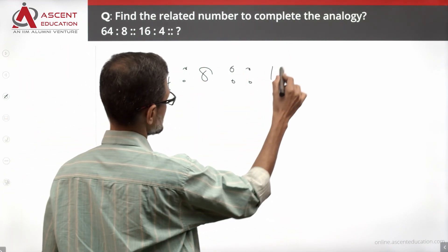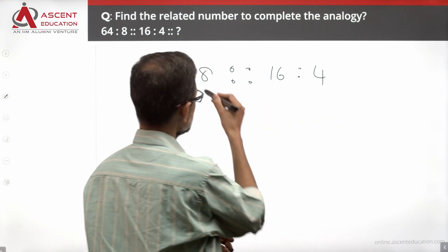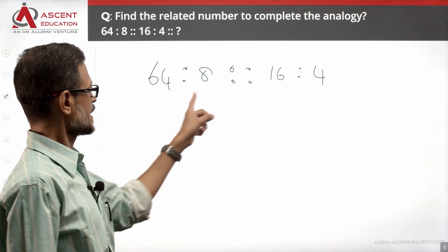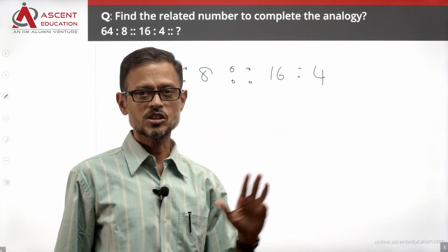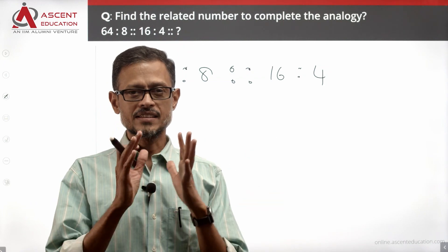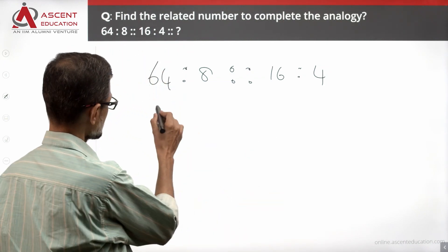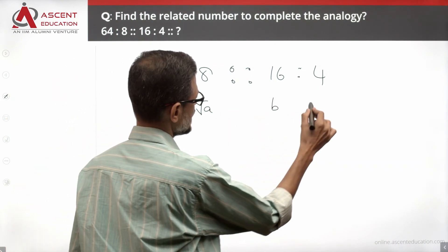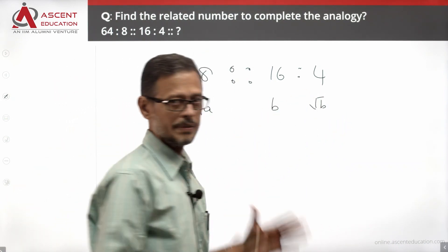Second part is 16 is to 4. So essentially, the reasoning that they have taken is, if this number is an a, this is going to be equal to root a. This number is a b, this number is going to be equal to root b. Right, super.